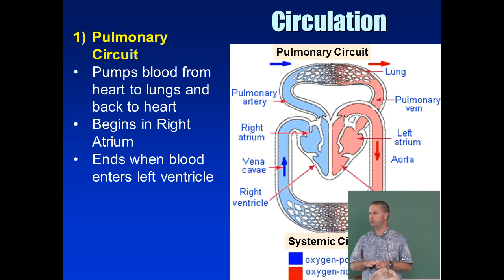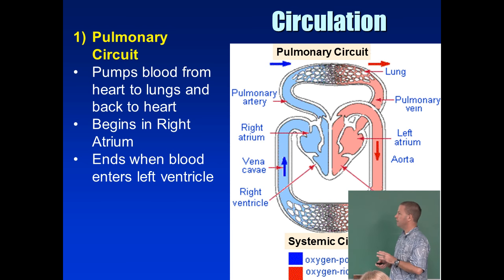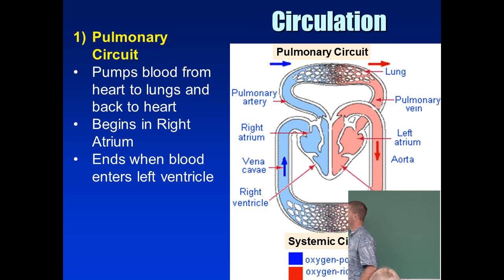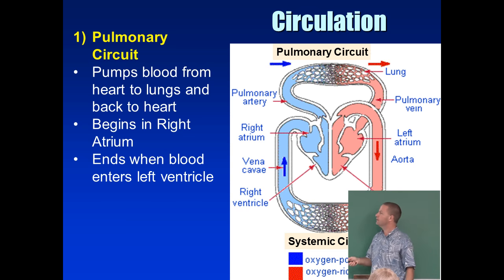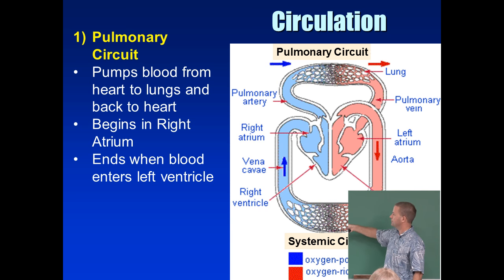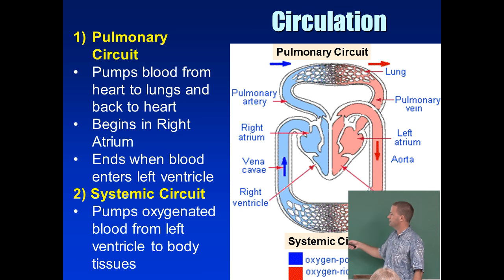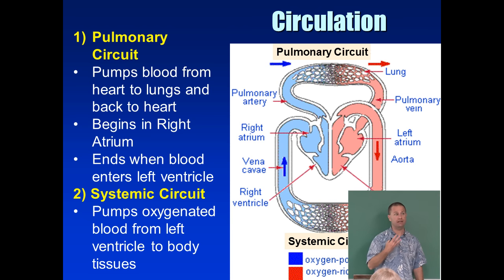There are two circuits to know. The first is the pulmonary circuit — 'pulmonary' meaning lungs — which pumps blood to the lungs. It starts on the right side of the heart. Note: when viewing a diagram, the right side of the heart appears on your left because we view it as if it were your own heart facing you. Blood is pumped from the right ventricle up through the pulmonary circuit to the lungs.